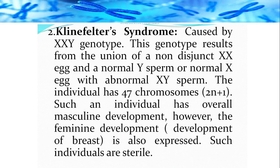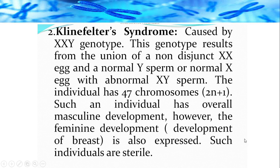Klinefelter syndrome is caused by the XXY genotype. This results from the union of a non-disjunct XX egg with a normal Y sperm, or a normal X egg with an abnormal XY sperm. The individual has 47 chromosomes — a 2n+1 trisomy condition. Such an individual has overall masculine development because the Y chromosome is present, but because two X chromosomes are also present there is feminine development such as breast development, and these individuals are sterile.